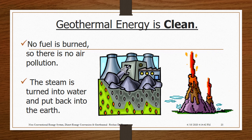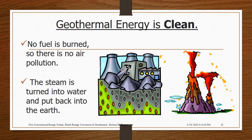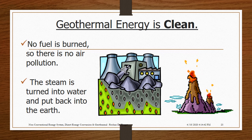Geothermal energy is renewable. The hot water we use will be replaced by rain, and the heat inside the earth will always be there — more heat is made every day in the earth's core. We won't run out of geothermal energy. It is also clean: no fuel is burned, so there is no air pollution. The steam is turned into water and put back into the earth. Geothermal energy is cheap, with new power plants able to make electricity for about the same cost as coal power plants.